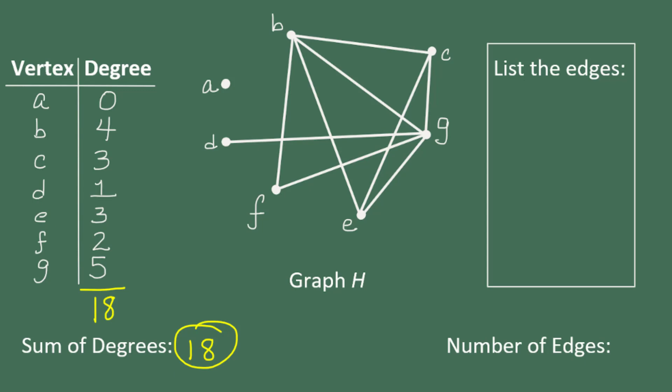When we list all of the edges, we need to be very methodical about it. Since I have letters labeling each of my vertices, I can use the two letters corresponding to the vertices at the ends of each edge to label the edge. And I can go in alphabetical order to ensure that I don't miss any edges, and I don't list any of them twice. This is called a systematic approach to listing.